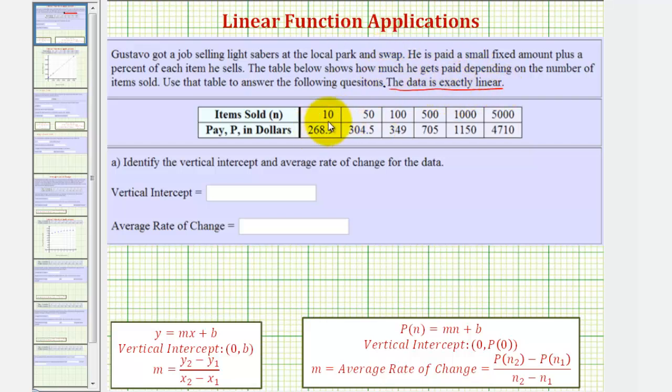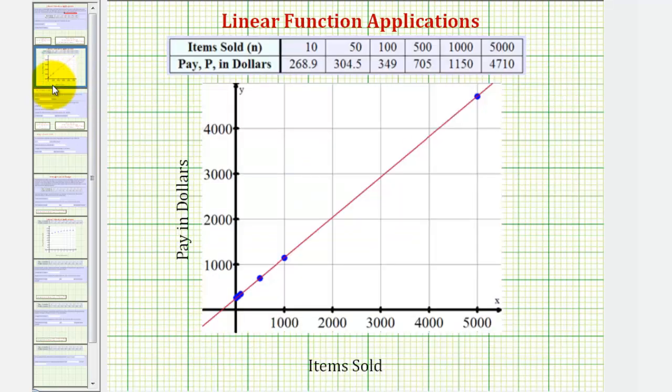Because the data is exactly linear, if we were to plot these ordered pairs on the coordinate plane, notice how we could sketch a line passing through all six points.